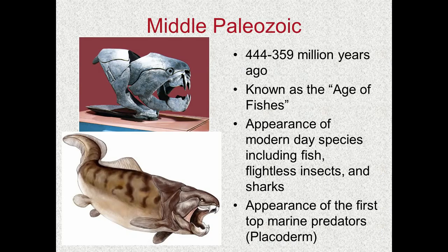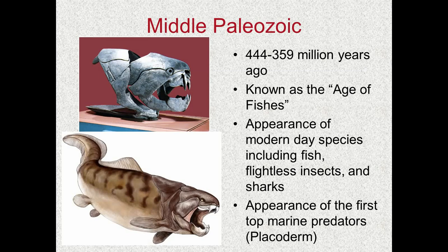If you take a look at this bottom picture, here's a placoderm — I know what you're thinking, that's a shark. Nope, that's a fish. Some of the larger species from head to tail probably reached 20 feet in length. They evolved bony armor plating over their heads — thus the term placoderm, which means armored fish. You can actually see a fossil of one of those armored platings. They are top marine predators at this time. In the early to middle stages of the Middle Paleozoic, life is still confined to the oceans. We won't see life on land until the latter stages.